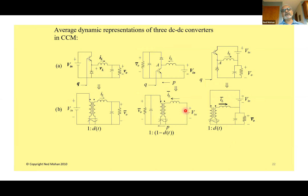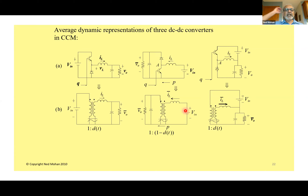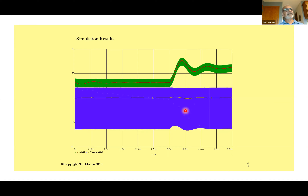A PSpice simulation shows the response comparing the switching power pole circuit versus the average power pole model — they pretty much follow each other. There's a slight difference because the average representation, kept simple, does not include parasitics like MOSFET on-state resistance and turn-on and turn-off times.